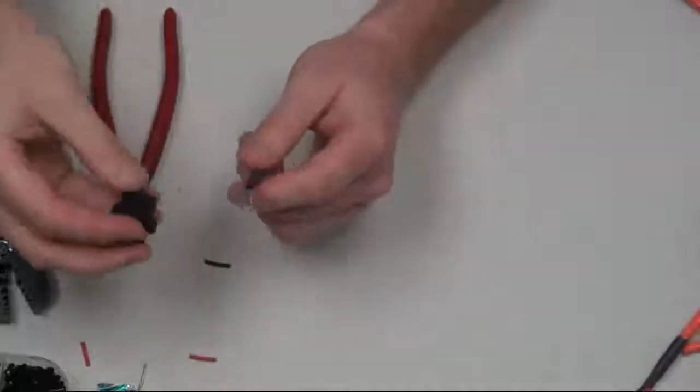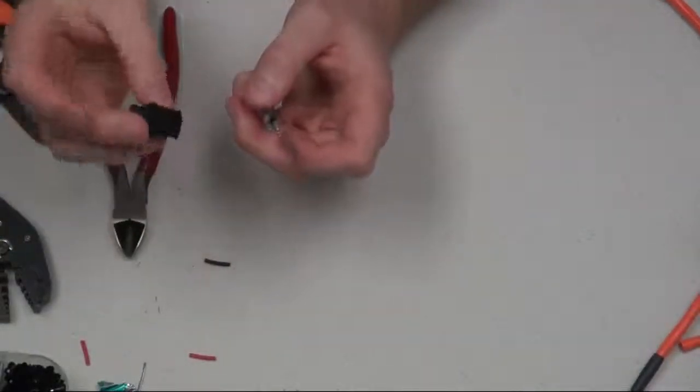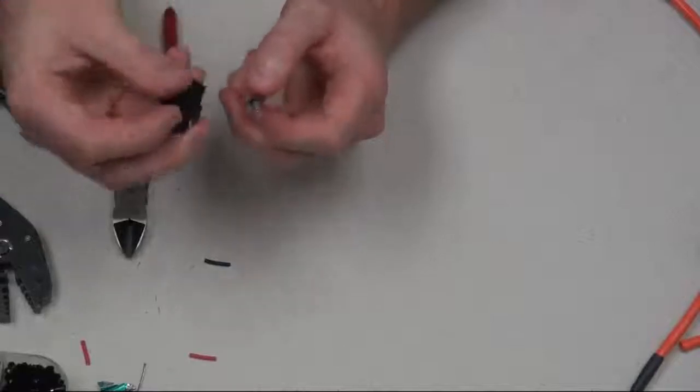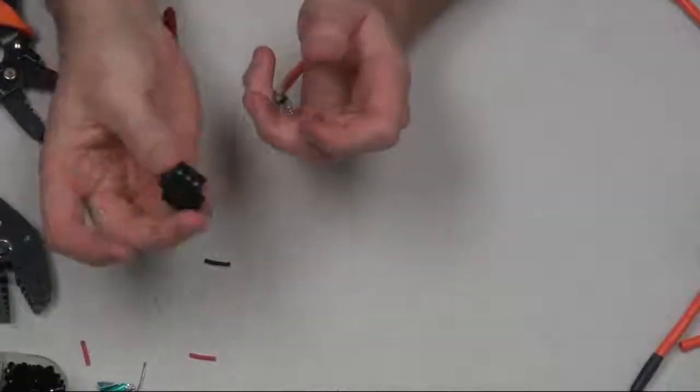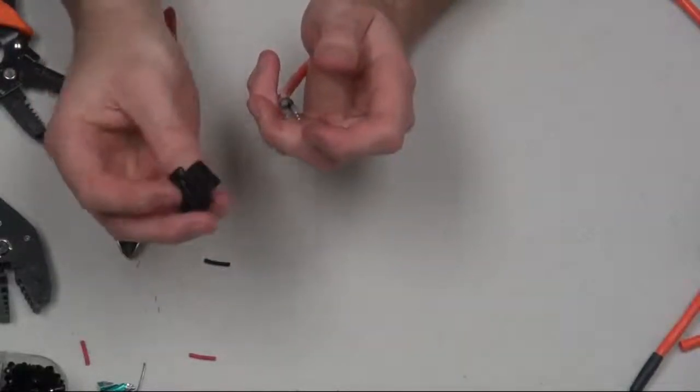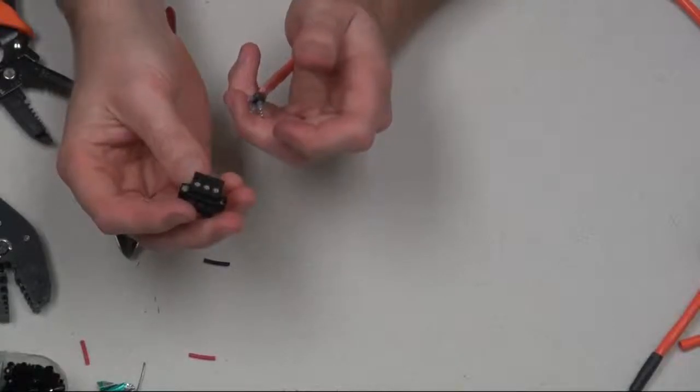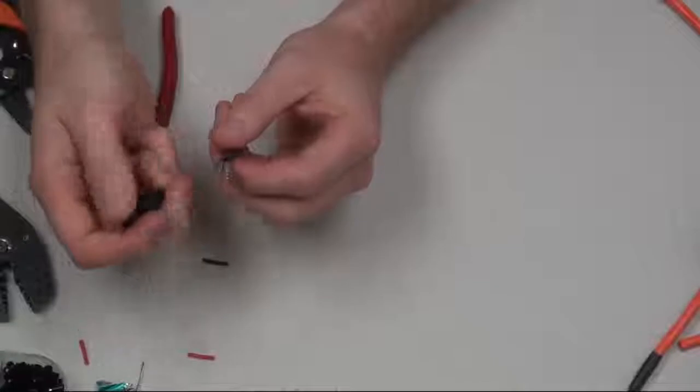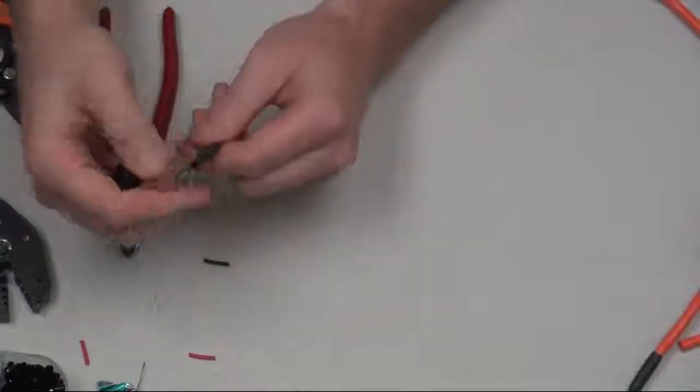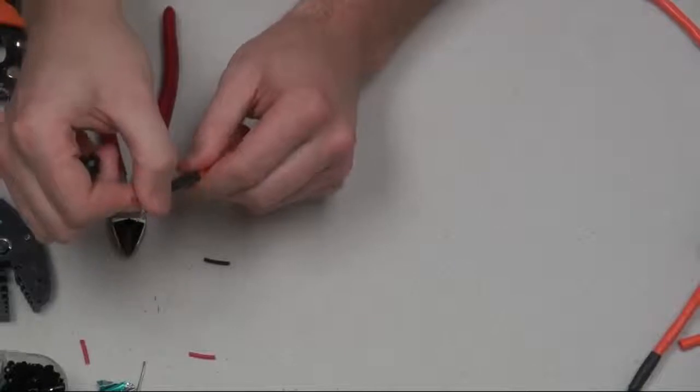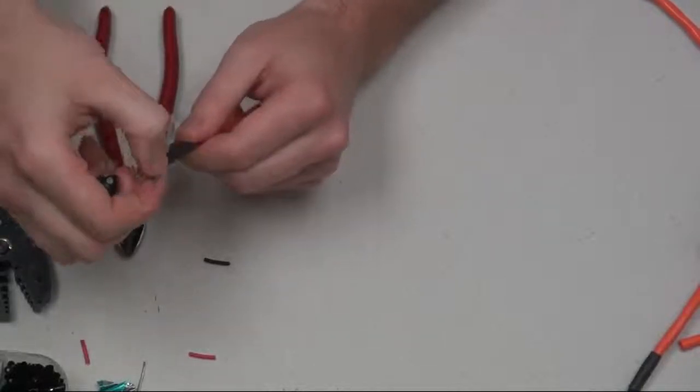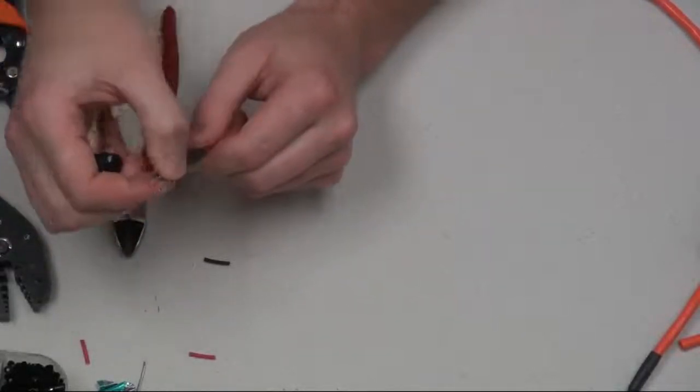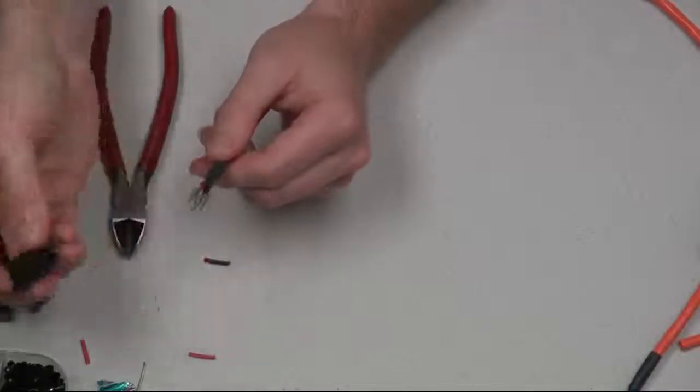And in this case, we'll go ahead and connect it to the terminal block that we're going to be using. Some of them are labeled. This one, in particular, doesn't have any labeling for positive, shield, and negative. So not a big deal. Once you pick your particular color coding and everything for your installation for what's positive and negative, you just want to make sure you stick with that and follow the same process.